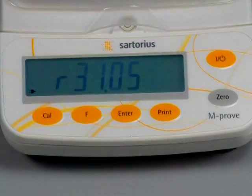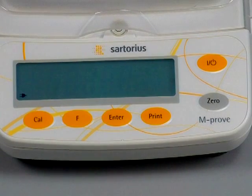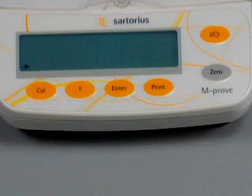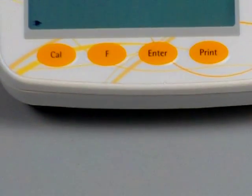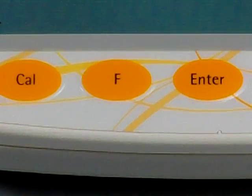You can see they have an LCD display with backlight, and you have the ability to calibrate the scale by just pressing the cal button, and you can change the weigh modes. Now with Sartorius, you can only toggle between two weigh modes.